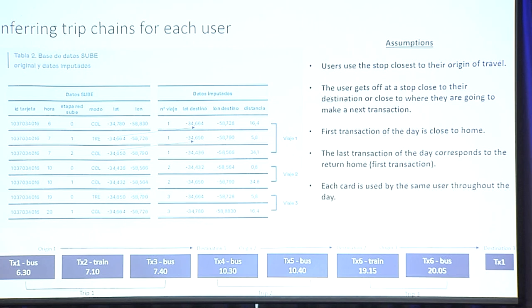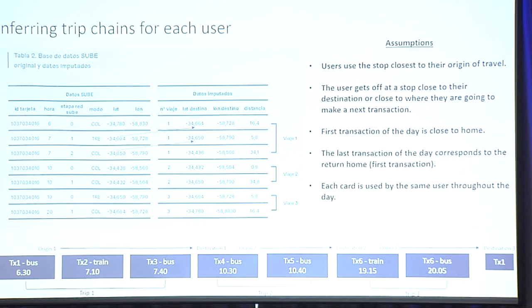There is a lot of literature on how to work with this data. The main problem is that when you combine the GPS data and the ticket data, you have an idea of where the trip started, but you don't know anything about where the trip ended. For many years, we've been working on how to recreate or infer what we call the trip chain — basically what every card or every user does during the whole day.